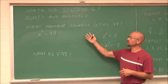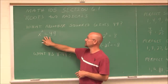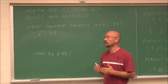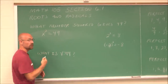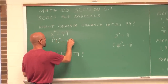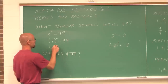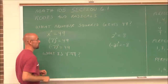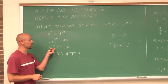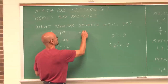The first thing we're going to look at is a question: what number squared gives us 49? There are two possibilities. 49 is a perfect square — it's 7 times 7, so 7 squared gives 49. The other possibility is negative 7, because negative 7 times negative 7 is also 49 — a negative times a negative is a positive. So there are two solutions: plus or minus 7.